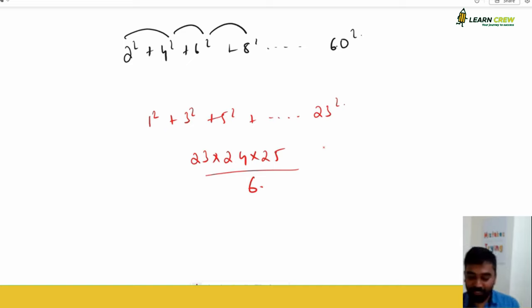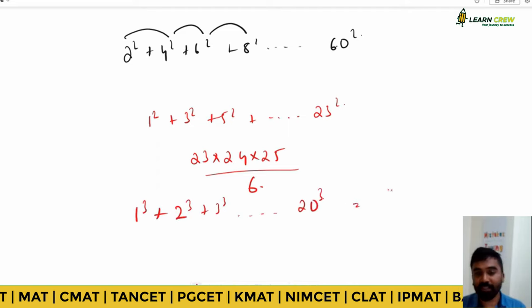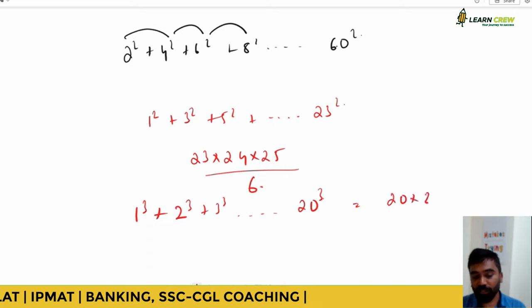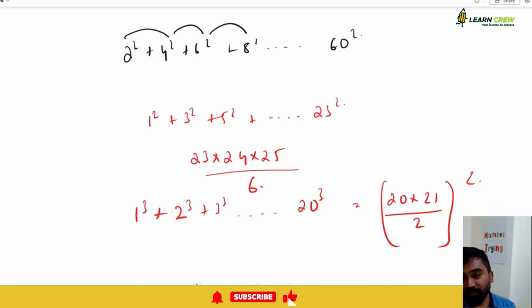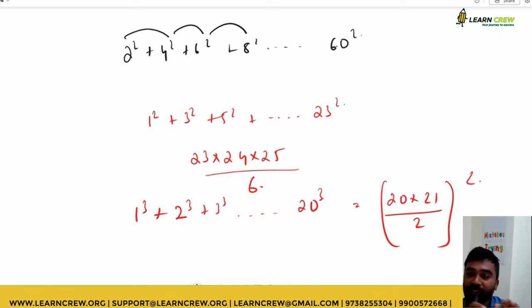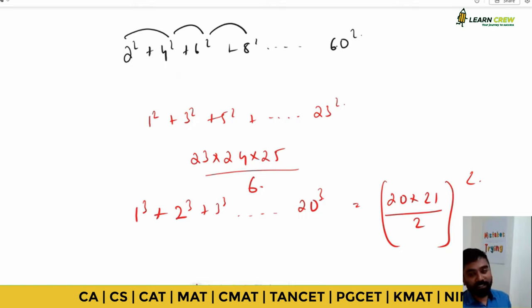For cube sequences, the formula is [n(n+1)/2]². For squares with sequential numbers: n(n+1)(2n+1)/6. For even or odd number squares: n(n+1)(next number)/6. For cubes: [n(n+1)/2]². We will stop here today — other topics like factors will take at least another one and a half hours.